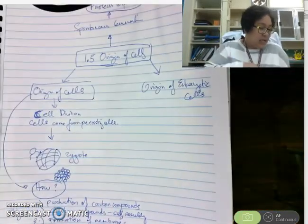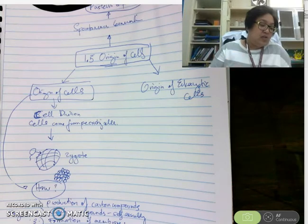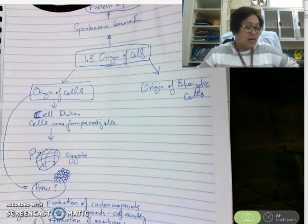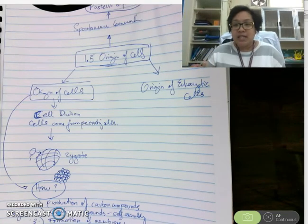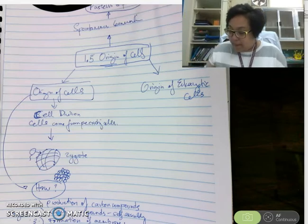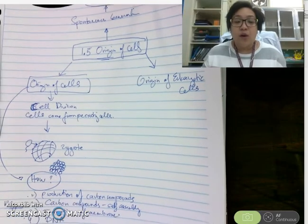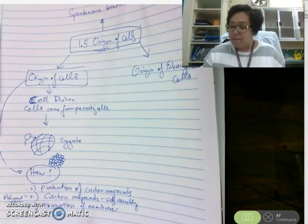A possible site for the origin of the first carbon compounds, according to the textbook, is deep sea vents — found under the ocean where really hot gushes of water carry inorganic chemicals or sulfides. These sulfides, combined with the heat, enable carbon compounds to self-assemble into macromolecules or polymers.